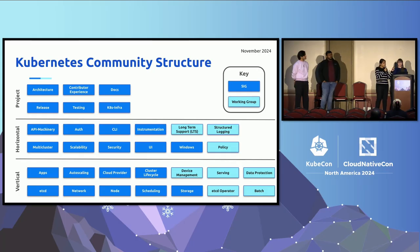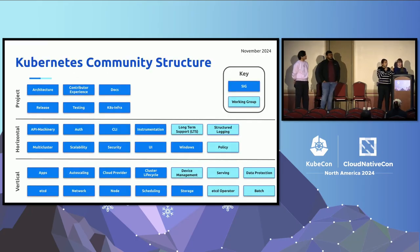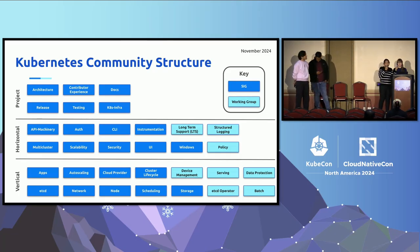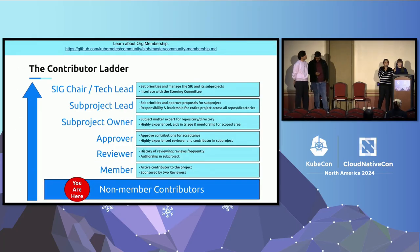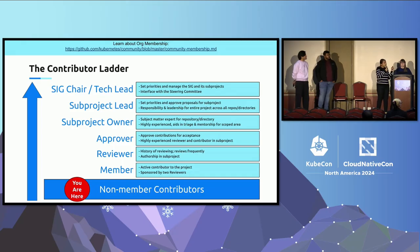Here is how the contributor ladder looks. You start by becoming an org member after contributing consistently over months with significant contributions. Once an org member, as you contribute more and provide guidance — reviewing code, triaging issues — SIG leads can help you become a reviewer. The next step is approver, where you also have the ability to merge or approve code.